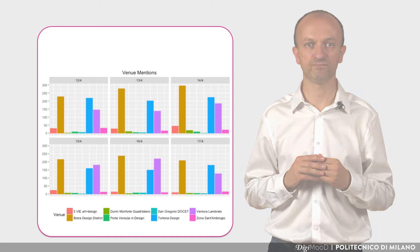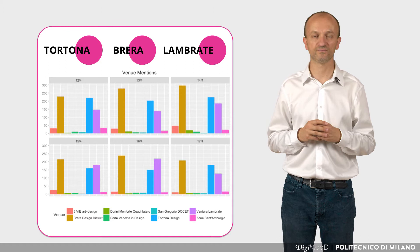This diagram shows how frequently each zone is mentioned. Tortona, Brera and Lambrate are definitely the winners here.